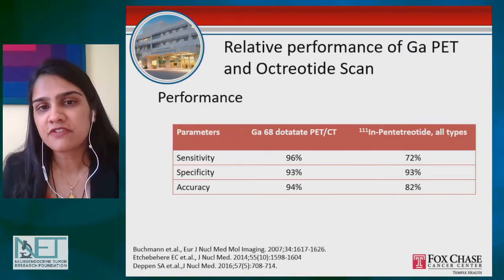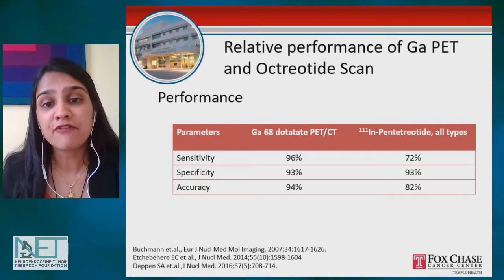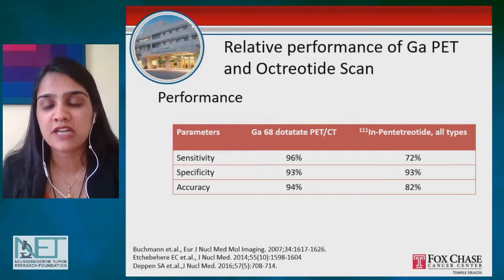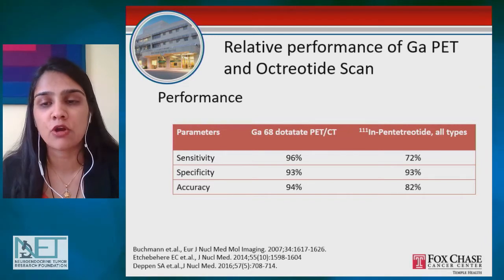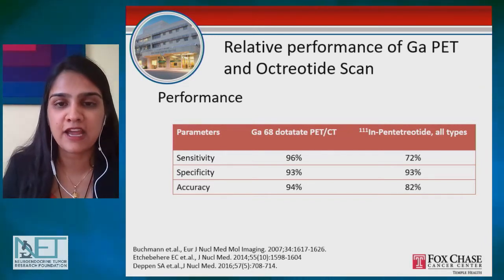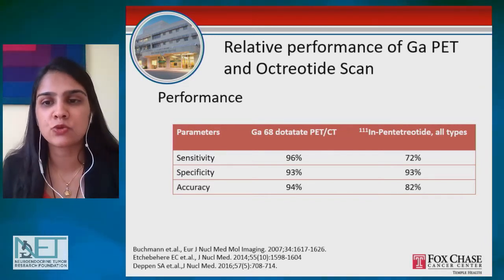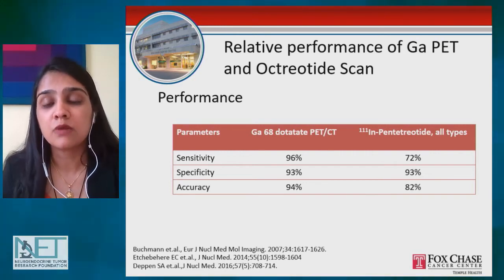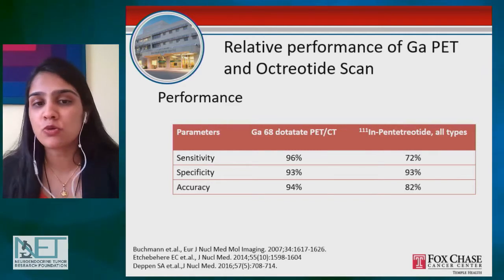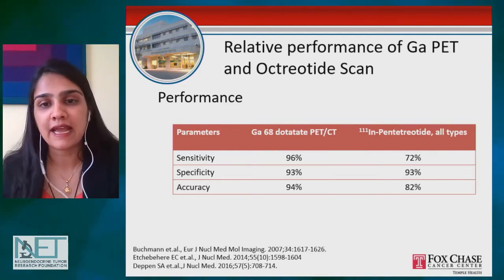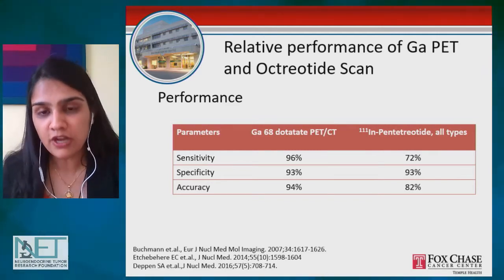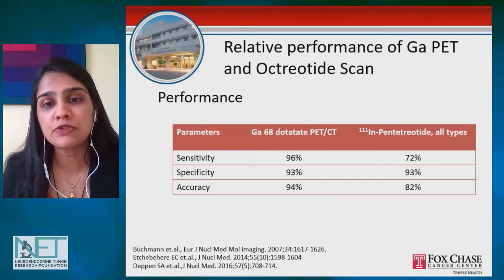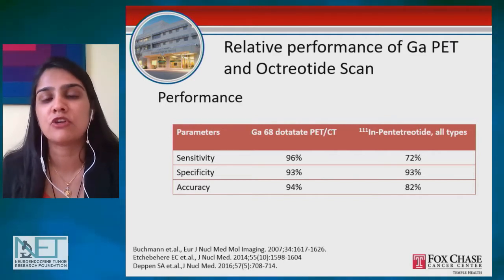This slide shows the efficacy and sensitivity of two different types of functional imaging tests — the octreotide scan and the gallium PET scan, also known as the NETSPOT scan. The sensitivity, specificity, and accuracy of the gallium PET scan is very high. It was already quite good for the octreotide scan, but we reached another level with gallium Dotatate PET scans. This helps diagnose patients much more accurately than we could 10 to 15 years ago.